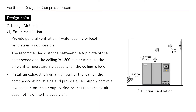First, about entire ventilation. 1. Provide general ventilation if water cooling or local ventilation is not possible. 2. The recommended distance between the top plate of the compressor and the ceiling is 1200 mm or more, as ambient temperature increases when the ceiling is low. 3. Install an exhaust fan at a high position on the wall on the compressor exhaust side, and provide an air supply port at a low position on the supply side so that exhaust air does not flow into the supply air.